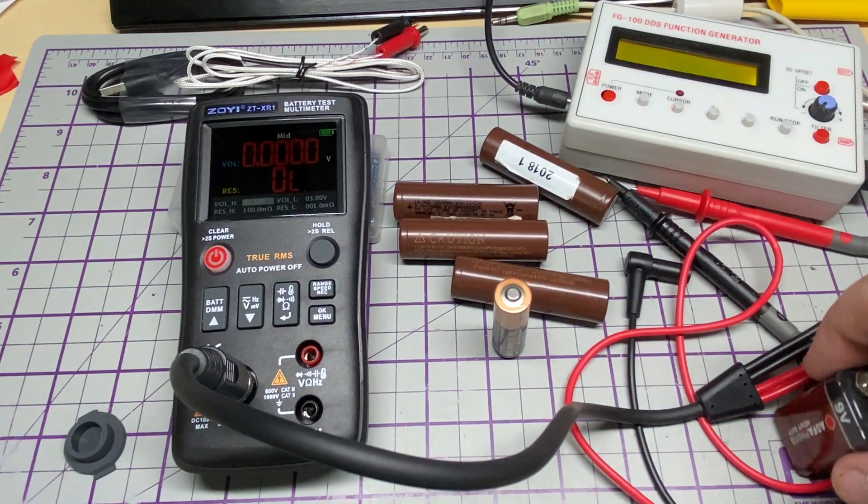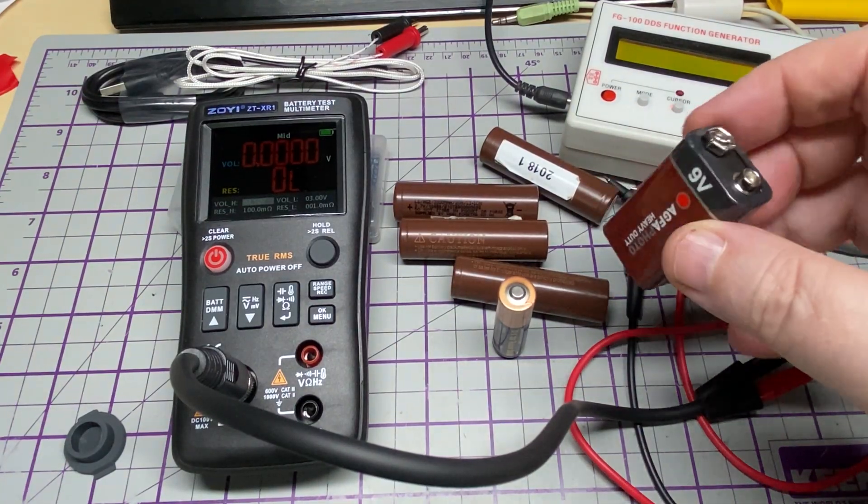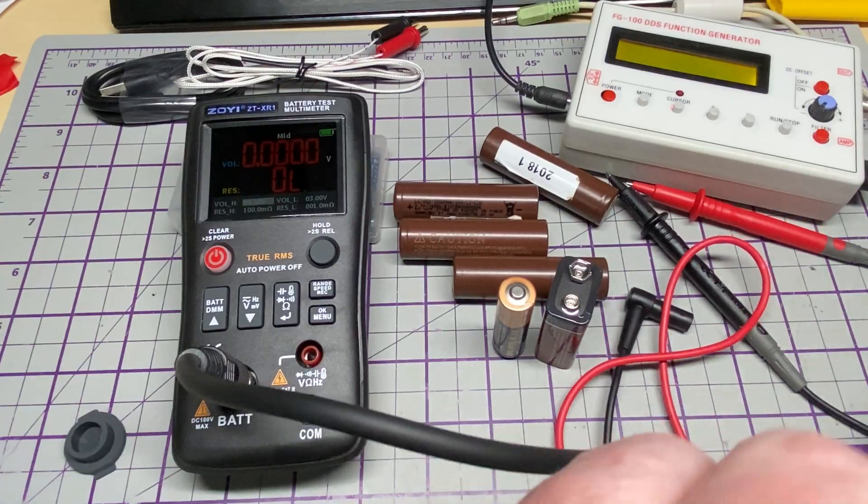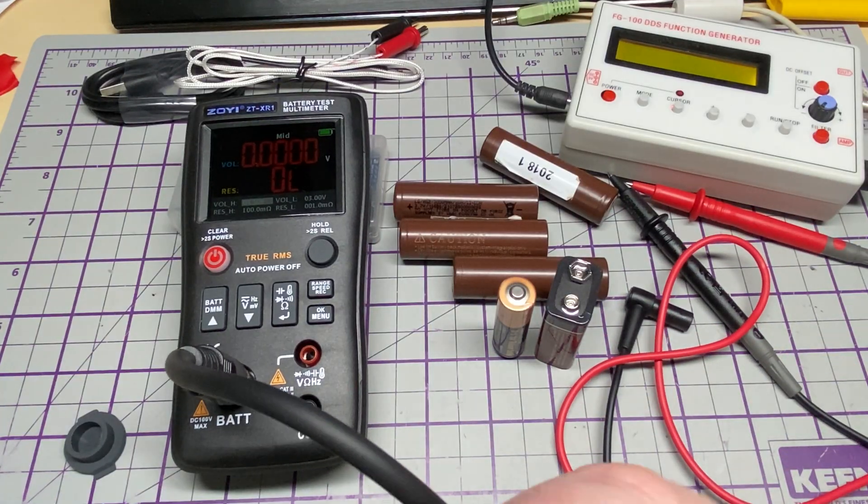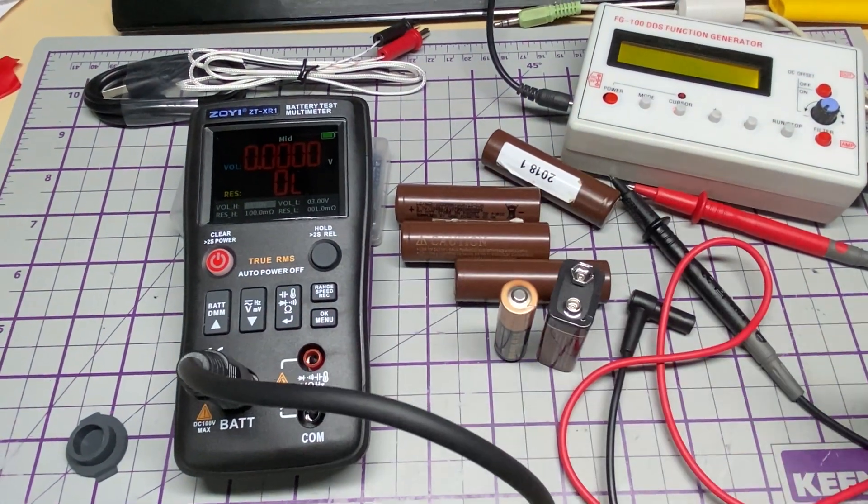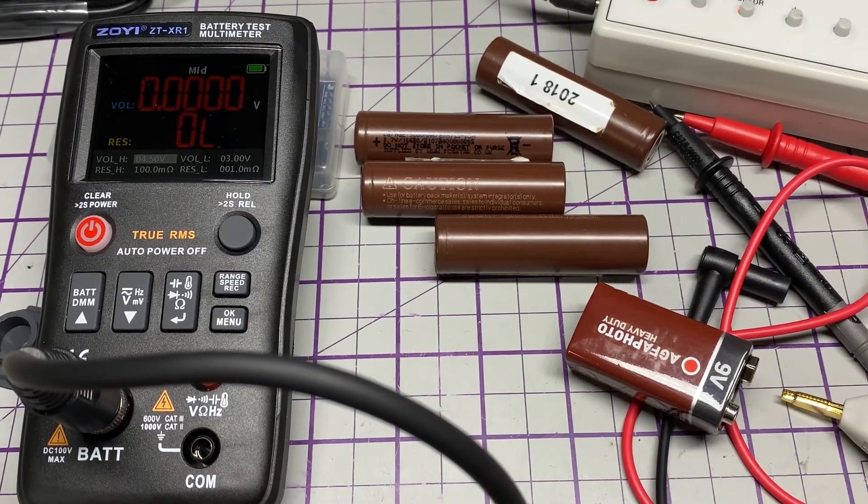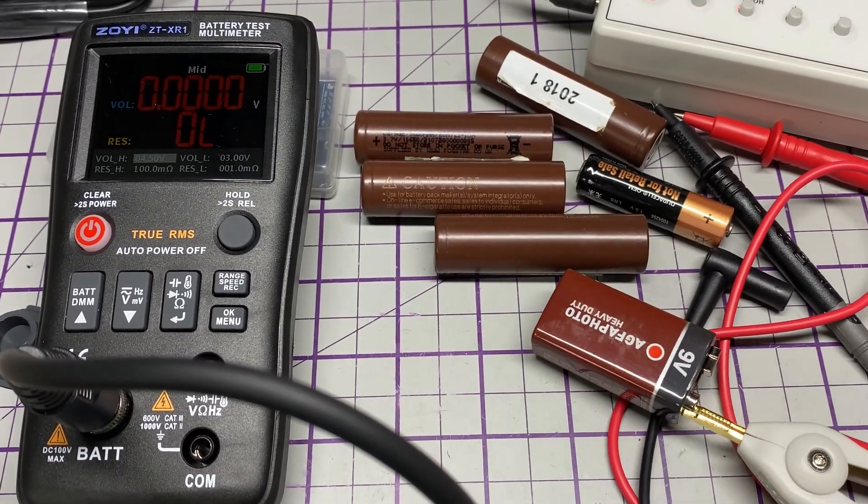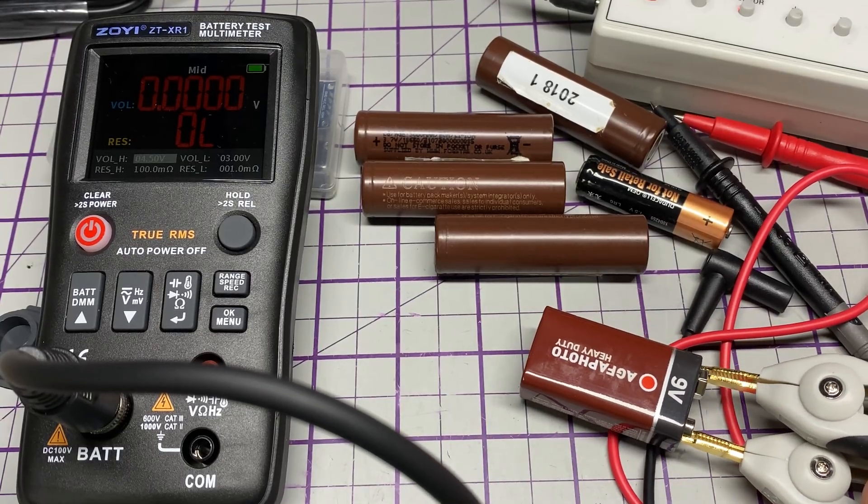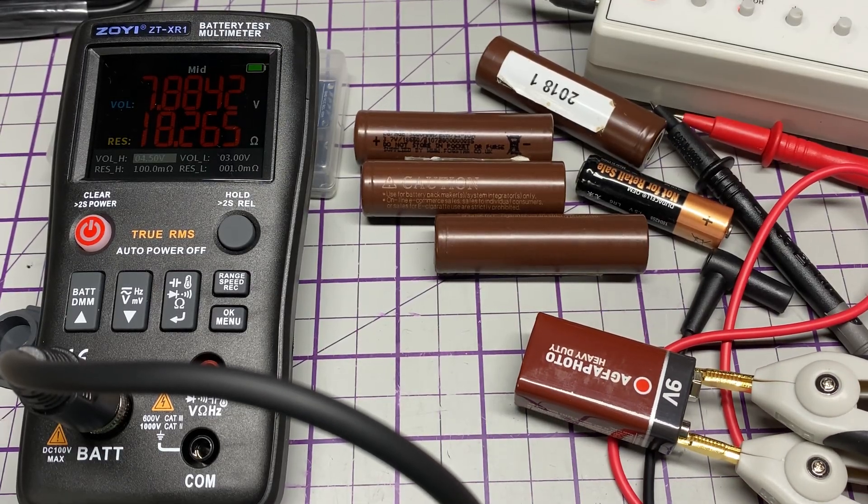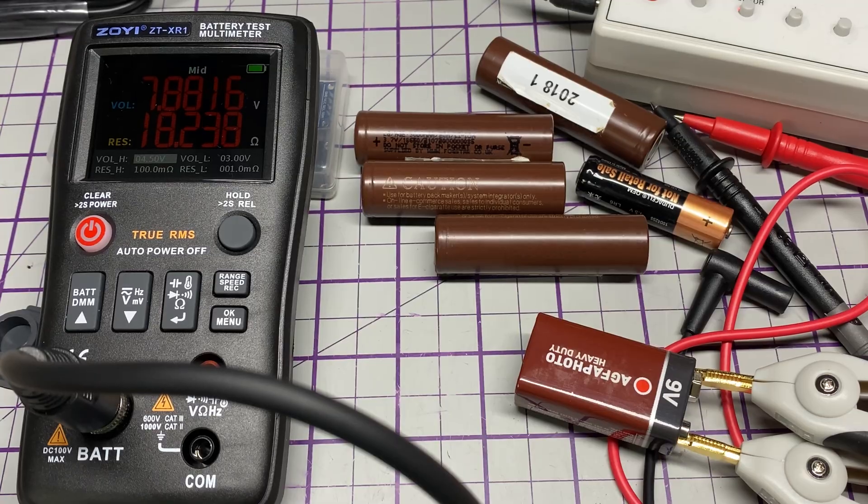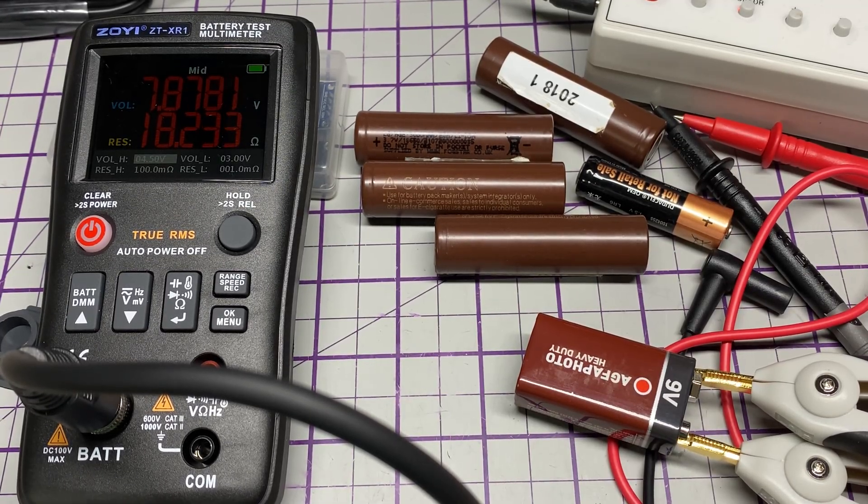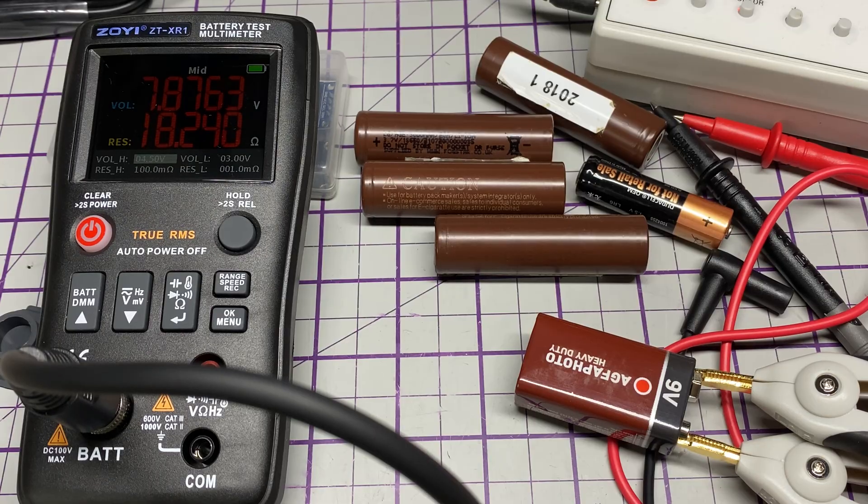Now we've got some random batteries that should be not fully working, should we say. Let's have a look at some dead batteries to start off with. We've got this 9-volt battery. Now I know this battery was below specification. There we go, 7.8 volts. We know that that's bad, no problem.